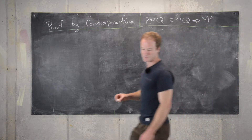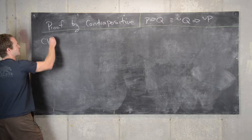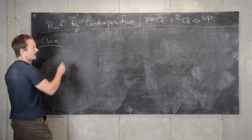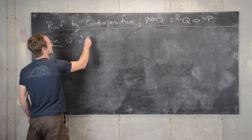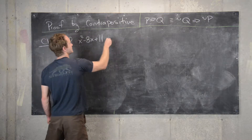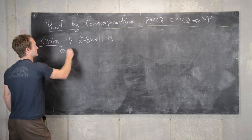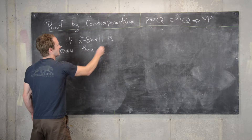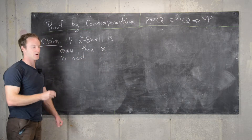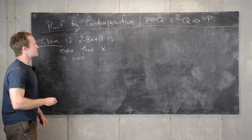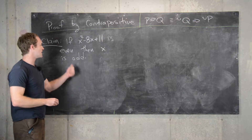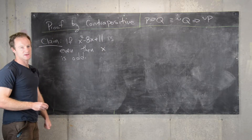Let's look at the statement we want to prove. The claim is: if x squared minus 8x plus 11 is even, then x is odd. Let's see what the statements p and q are in this case, and furthermore what not p and not q are.